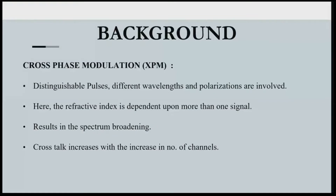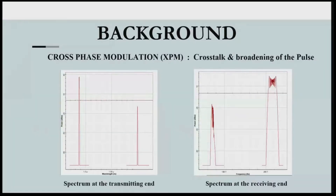Same as self-phase modulation, cross-phase modulation can change and broaden the frequency spectrum of the pulse, which finally results in spectral broadening. You can see comparing the transmitting end with the receiving end, there is a broadening of the pulse. Due to this broadening, the data transmission rate is reduced.